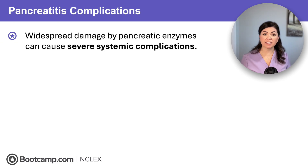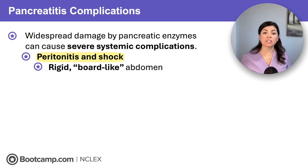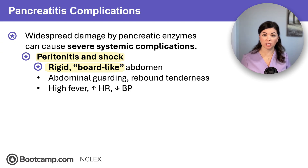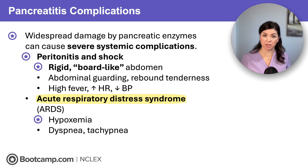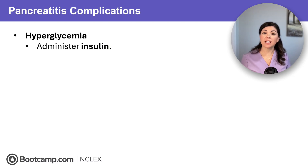Widespread pancreatic enzyme release can cause severe systemic complications. These enzymes can damage the peritoneal lining, resulting in peritonitis and shock — monitor closely for a rigid board-like abdomen, abdominal guarding, rebound tenderness, fever, tachycardia, and hypotension. These enzymes can also spread to the alveolar-capillary membrane in the lungs, causing ARDS — monitor for hypoxemia, dyspnea, and tachypnea, and administer oxygen; prepare for intubation as needed. Autodigestion of the pancreas causes glucagon release, raising blood glucose and resulting in hyperglycemia — administer insulin as needed.